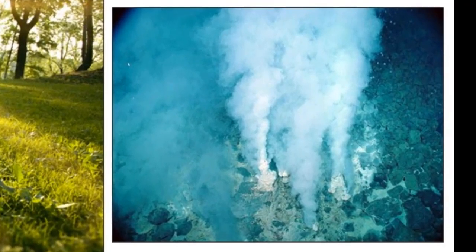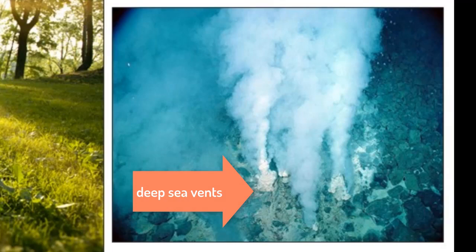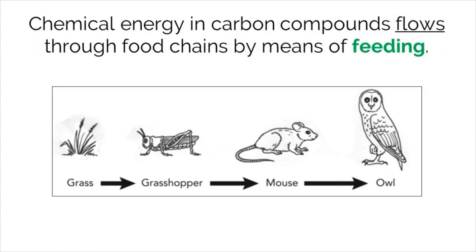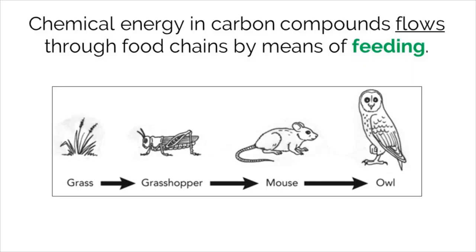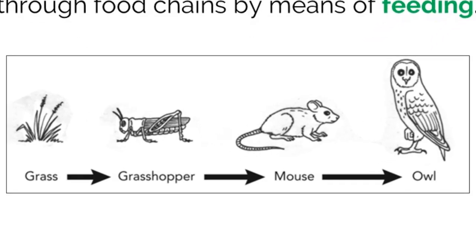You will usually find these organisms in hostile environments like volcanic fumaroles, geysers, and deep sea vents. Once chemical energy is harvested by autotrophs or chemotrophs, it can flow through a food chain via the process of feeding. Let's take a look at this simple food chain as an example.